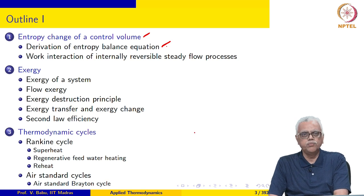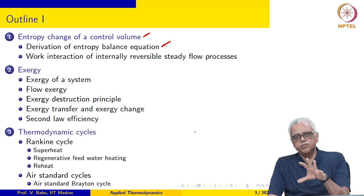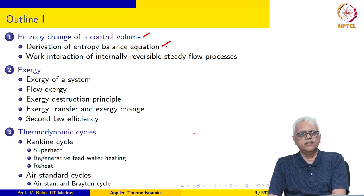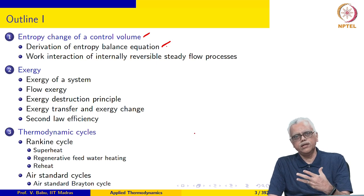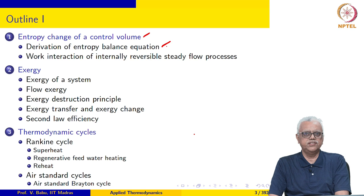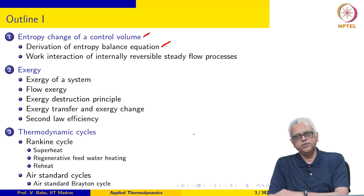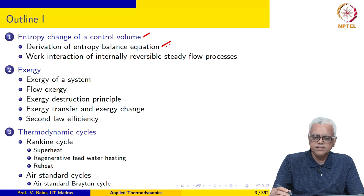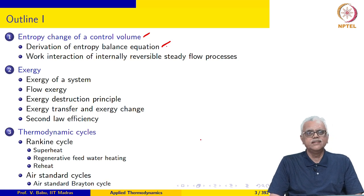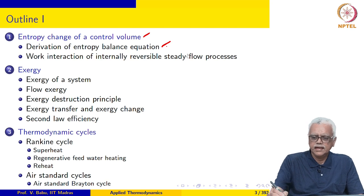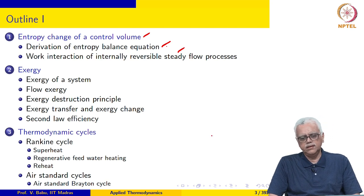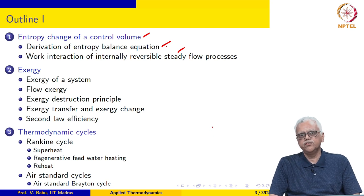Rate of entropy generation in the universe is perhaps an even more important performance metric, as we saw in the previous course. Devices should operate so as to minimize entropy generation in the universe, and we will use that to define the second-law efficiency in this course. We also develop expressions for the work interaction of internally reversible steady-flow processes.